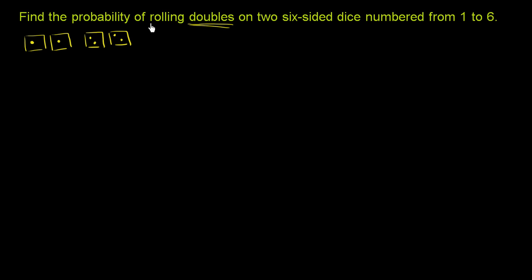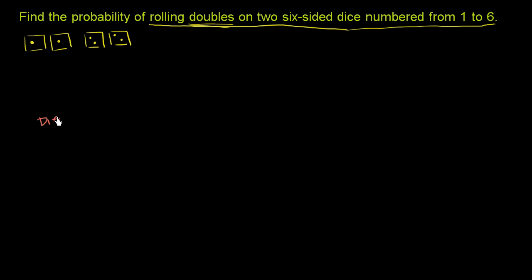So the event in question is rolling doubles on two six-sided dice numbered from 1 to 6. Let's think about all of the possible outcomes — or another way to think about it, let's think about the sample space here. What can we roll on the first die? Let me write this as die number 1. What are the possible rolls?